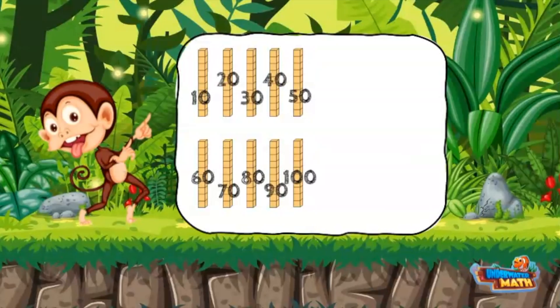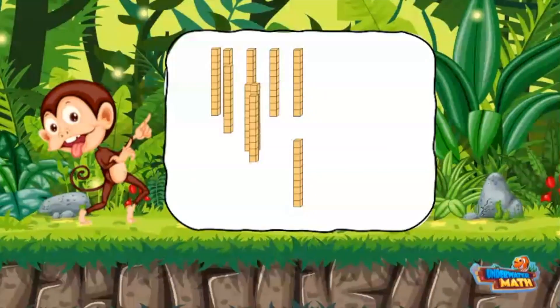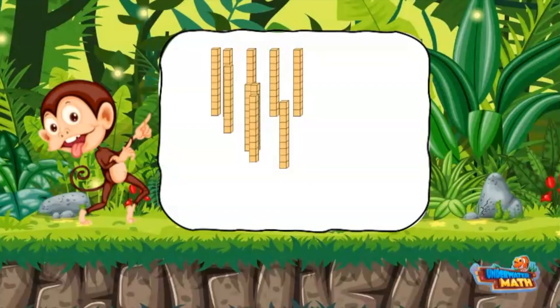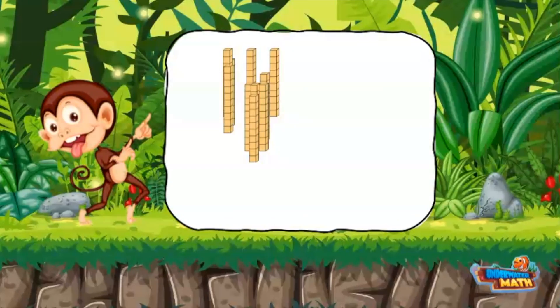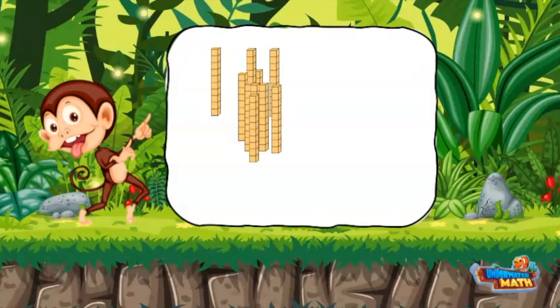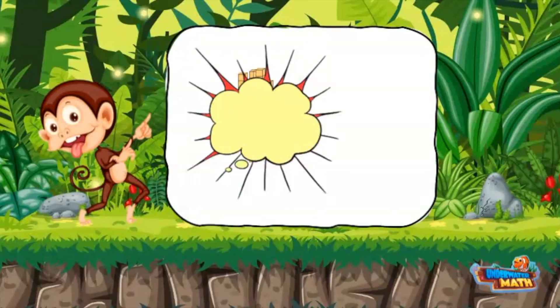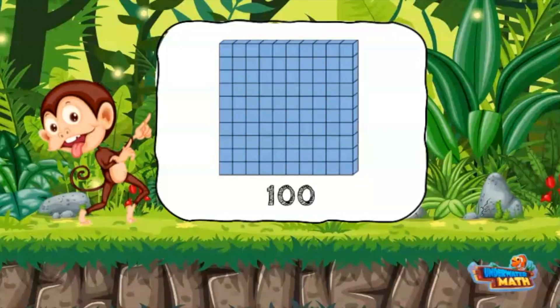If we bundle these together — which means putting smaller units in a group to make a larger unit — we get a 100. 10 rods are equal to 100.